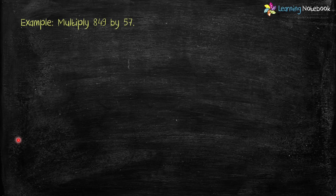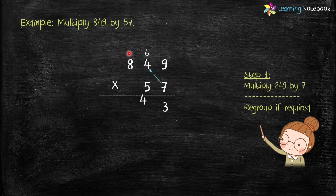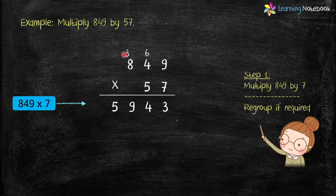Now let's solve this example using these three steps. First, write these numbers in columns as shown here. Now in step 1, let's multiply 849 by 7. 7 into 9 equals 63 — write 3 in the answer and 6 gets carried over to the 10's place. Next, 7 into 4 equals 28 plus 6 carry equals 34 — write 4 in the answer and 3 gets carried over to the 100's place.